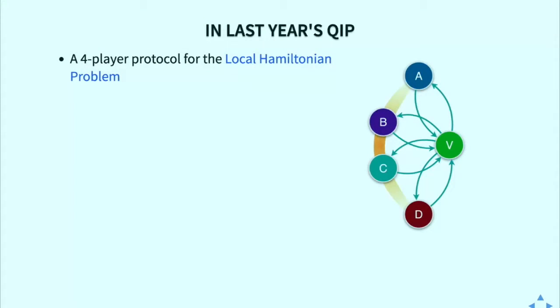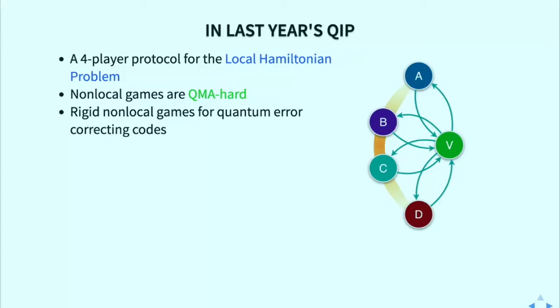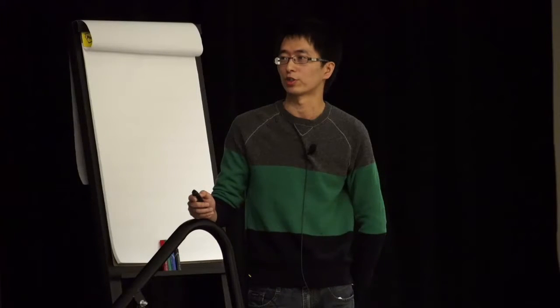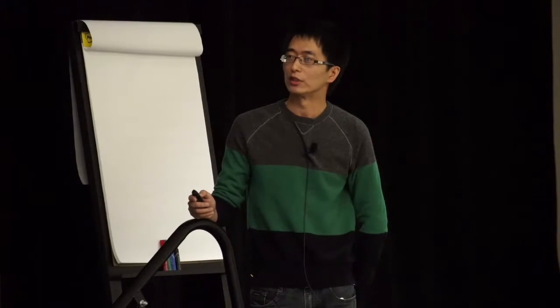This is what we showed last year. We gave a four-player protocol for local Hamiltonian problem, therefore nonlocal games are QMA hard. The basic technique we used is proving rigidity for some games based on quantum error correction codes so we have ability to encode quantum witness state, and at the same time, we can command the players, regulate their measurements. This is nice because we finally proved quantum complexity for this quantum game. But there's also a dark cloud because for classical games, we know they're NP-hard and in NP, so the problem is solved. But there's no upper bound known for nonlocal games, so it might not be the right answer and we'll see that's indeed the case.